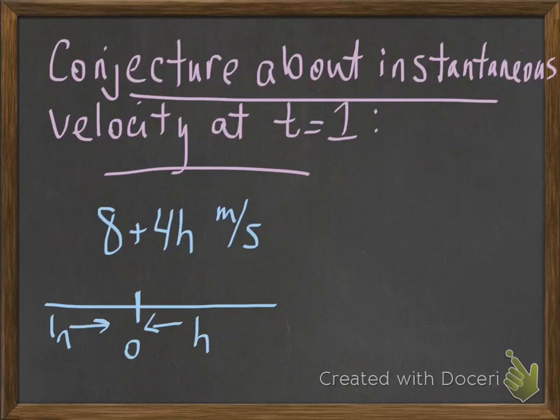So, as h gets closer and closer to 0, either positive or negative, what is happening to the quantity 8 plus 4h? Well, we're adding something smaller and smaller to 8, so this is going to 8 meters per second. And that, indeed, is our guess as to the instantaneous velocity. We'll confirm rigorously that, indeed, that is the case.